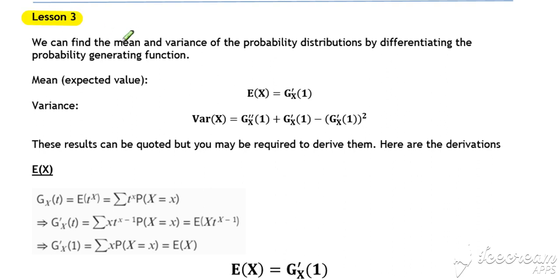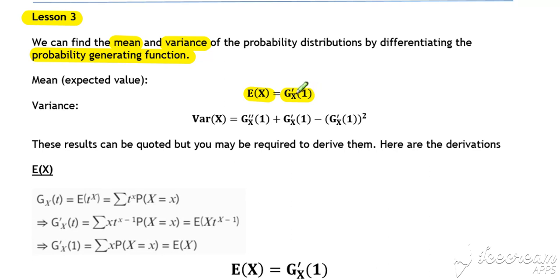In lesson three, we're now going to look at the mean and the variance of probability distributions. This is one of the significant advantages of the probability generating function form — the expected value can be found just by differentiating our probability generating function, g'(x), and then setting t equal to 1. So g'(x) evaluated at 1 is equal to our expected value of x.